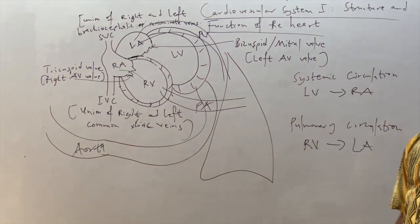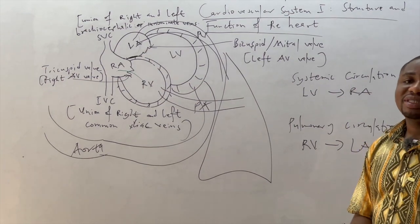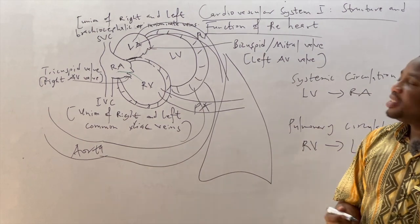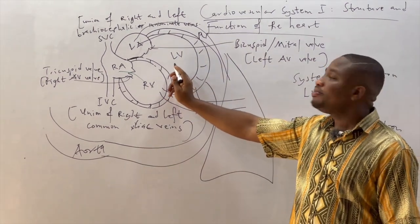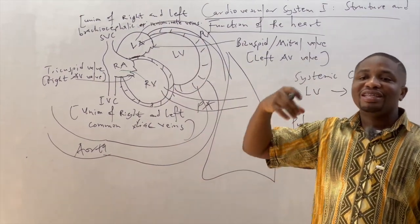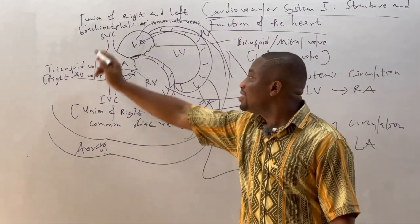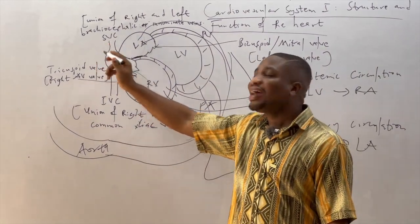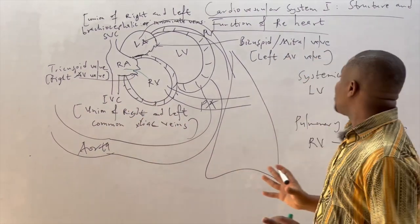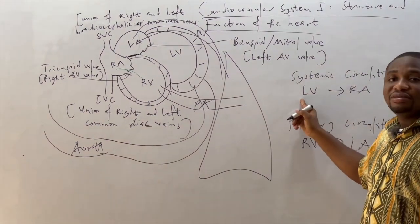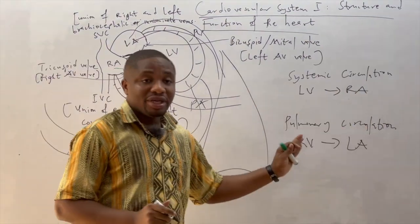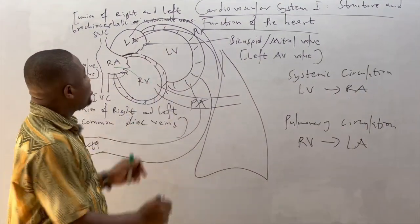There are two systems of circulation in the human body: the pulmonary circulation and the systemic circulation. The systemic circulation starts from the left ventricle, where the left ventricle pumps oxygenated blood through the aorta into the system, where the oxygen gets used up. The blood becomes deoxygenated and is returned by the superior vena cava and inferior vena cava into the right atrium, completing the systemic circulation. The systemic circulation begins from the left ventricle and ends in the right atrium.